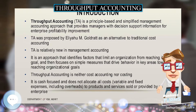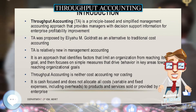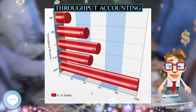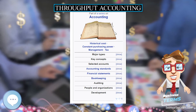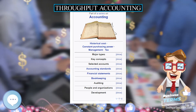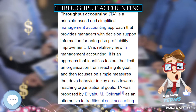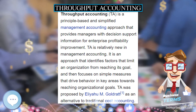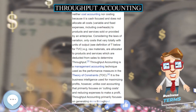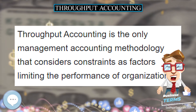Throughput accounting is the only management accounting methodology that considers constraints as factors limiting the performance of organizations. Management accounting is an organization's internal set of techniques and methods used to maximize shareholder wealth. Throughput accounting is thus part of the management accountant's toolkit, ensuring efficiency where it matters as well as the overall effectiveness of the organization. It is an internal reporting tool.